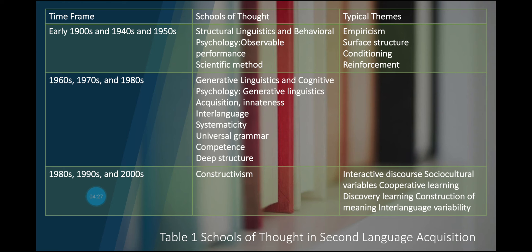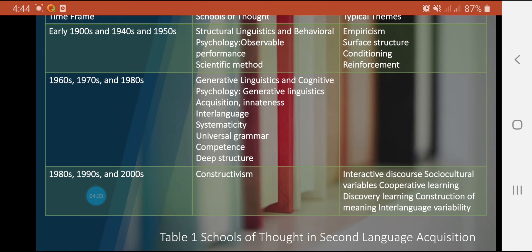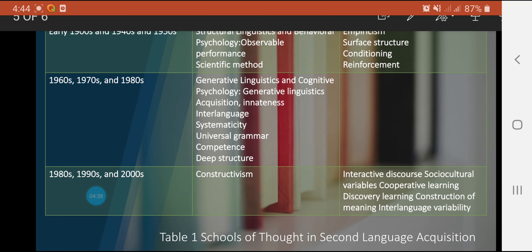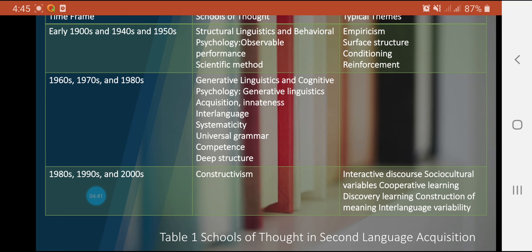Here is a timetable for the different schools of thought — you may take a screenshot of this to know the time frame of each of psychology's theories. All three of the historical positions described in this section — structural, behavioral, generative cognitive, and constructivism — must be seen as important in creating balanced descriptions of second language acquisition.